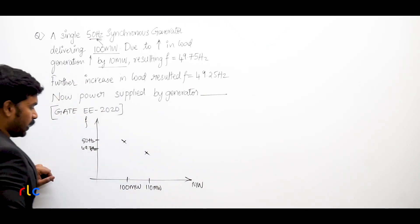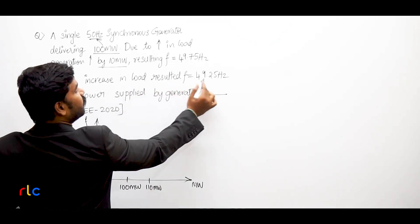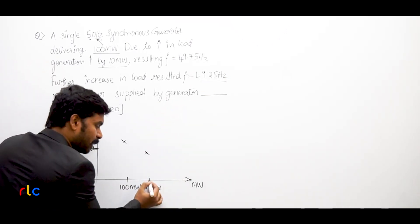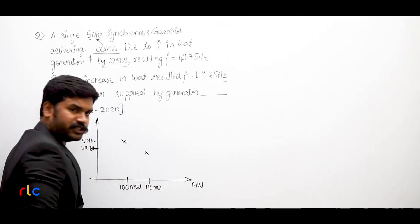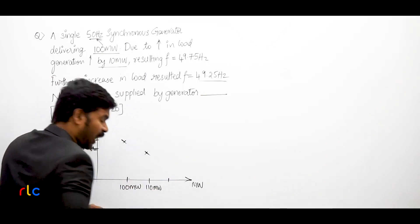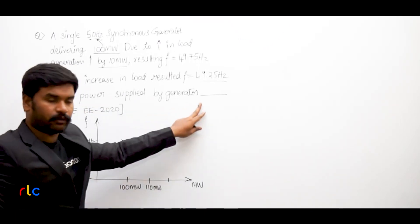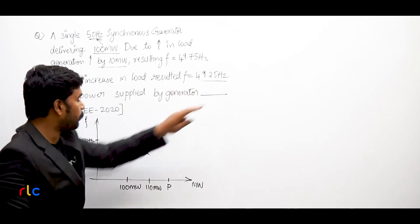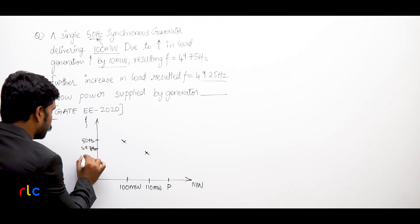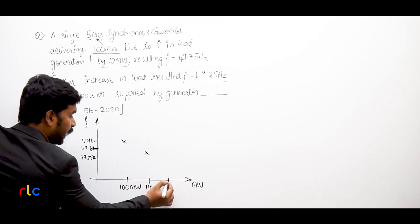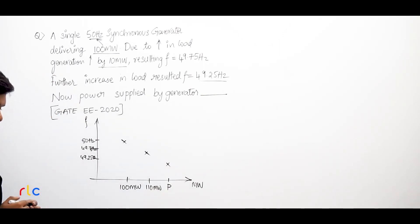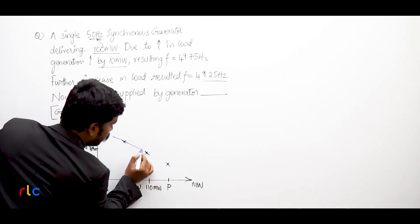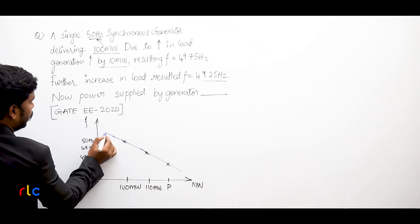With a further increase in load, the frequency drops further. From 110 megawatt the power has been further increased — let us say the increased power is P, which we have to find out. At this new power point, the frequency is 49.25 Hz. If you join all these points, you get the load-frequency curve.